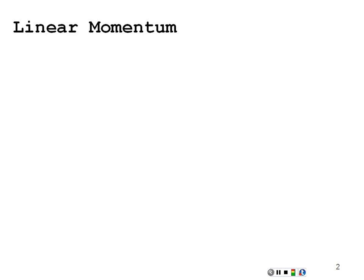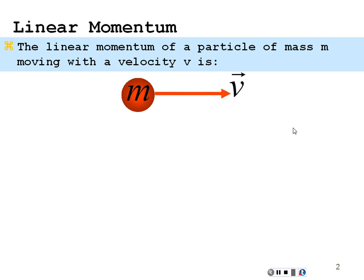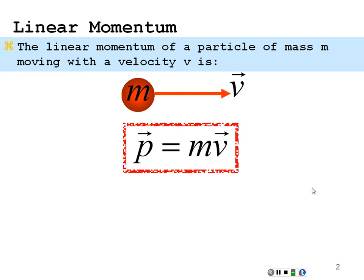There's another way to look at these systems, and that's through analysis of momentum. We define momentum as the mass times the velocity of a particle. P is momentum, equal to mass times velocity. Mass is a scalar quantity, velocity is a vector, so momentum is a vector.